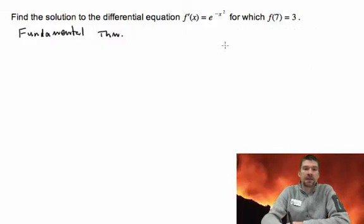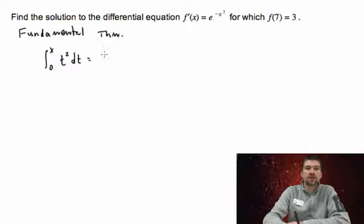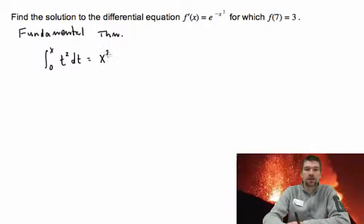Okay, and remember when we did that we had the integral from 0 to x of t squared dt. And remember this became x squared.